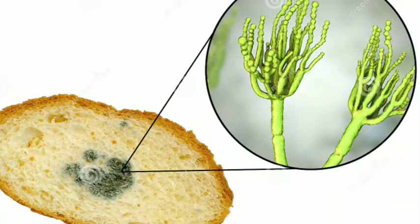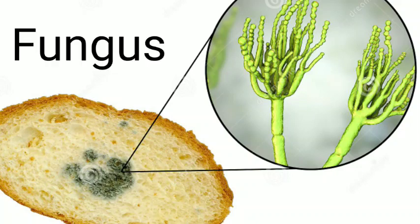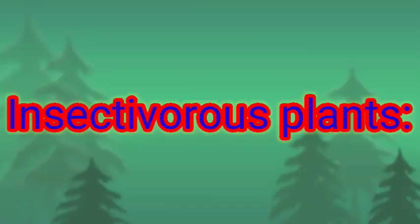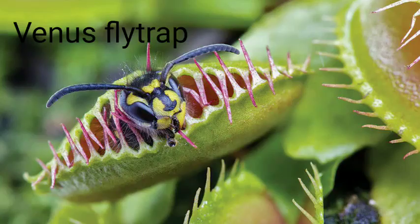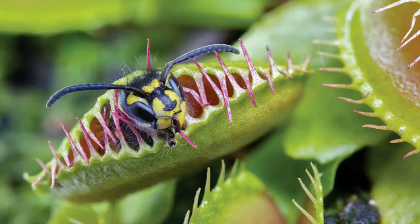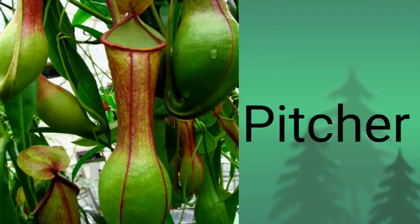Fungi do not have chlorophyll and cannot perform photosynthesis. They obtain food from starchy foodstuffs like bread with the help of root-like fibers for absorption of food. Another example is insectivorous plants. Insectivorous plants grow in soil deficient in nitrogen and fulfill their need of nitrogen by consuming insects. Examples of insectivorous plants are Venus flytrap, pitcher plant, drosera, etc.